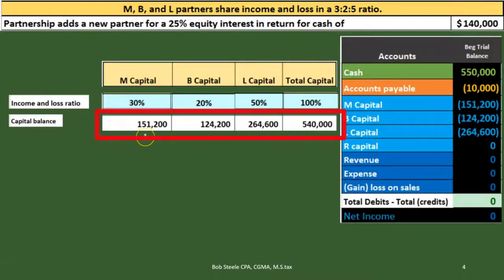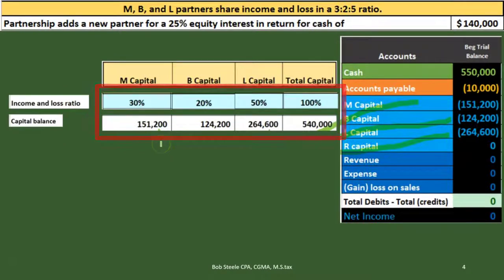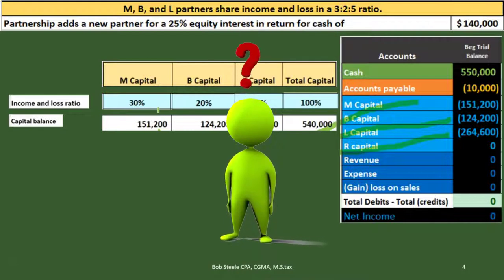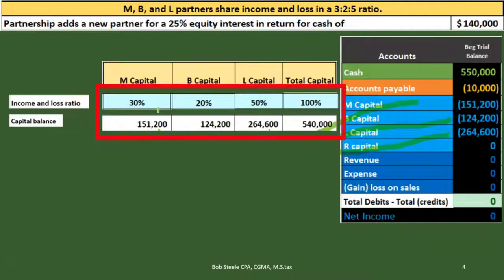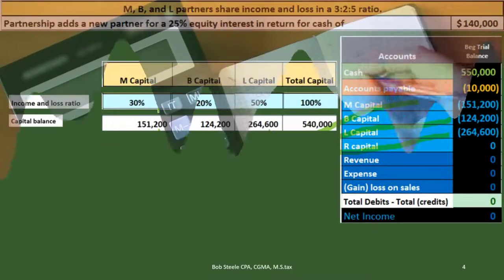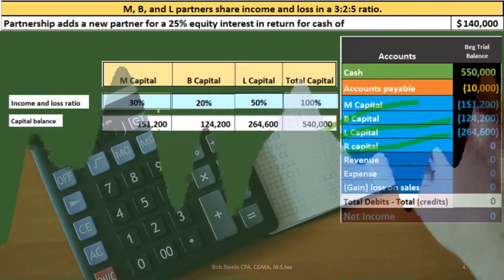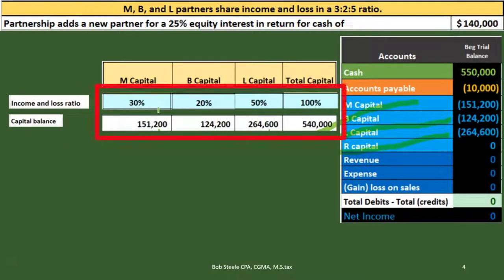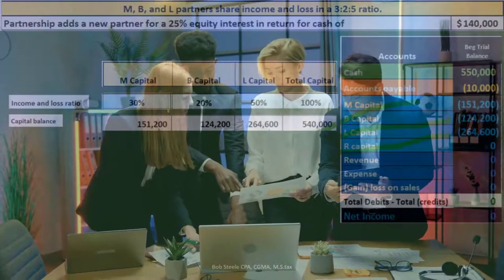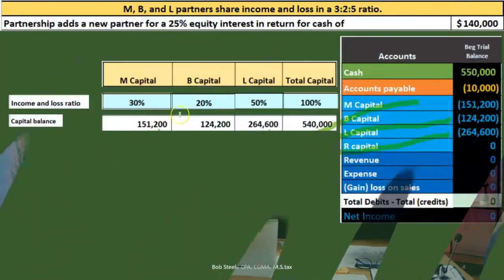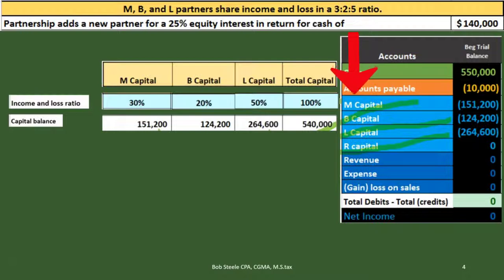Looking at the capital accounts in the trial balance: M's capital is $151,200, B's is $124,200, and L's is $264,600. Note that these capital account balances do not necessarily match the 3:2:5 profit-sharing ratio. Partners may have contributed different amounts initially or drawn different amounts, so it's rare for capital balances to align with profit and loss ratios.